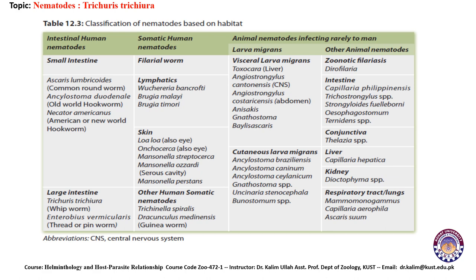This is the classification of nematodes based on habitat, as given in Table 12.3. Some are intestinal nematodes, some reside as somatic nematodes. In the intestinal nematodes column: in the small intestine, Ascaris lumbricoides — the common roundworm; Ancylostoma duodenale — also called the Old World hookworm; Necator americanus — also called the American or New World hookworm. In the large intestine: Trichuris trichura — the whipworm; and Enterobius vermicularis — the thread or pinworm.